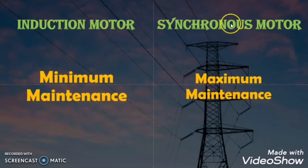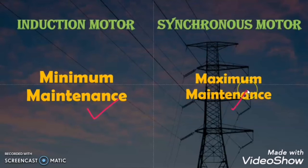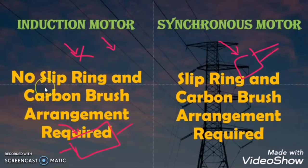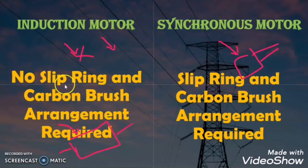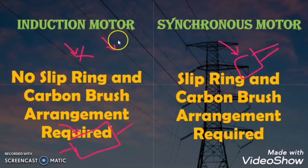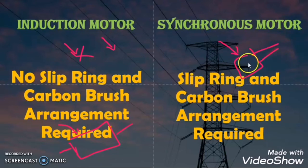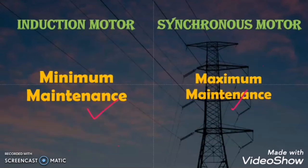The other difference is that the induction motor requires minimum maintenance, but the synchronous motor requires maximum maintenance. The reason is simple: wherever slip ring and carbon brush arrangement is involved, there is a lot of maintenance. In the induction motor, especially the squirrel cage type, there is no slip ring requirement, which is why it is called a maintenance-free motor. That is why the squirrel cage induction motor is the most popular motor throughout the world.